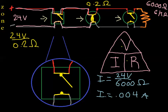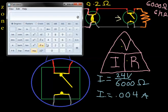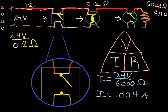So we're going to take 24 volts over 0.2 ohms. Go back to our calculator. 24 divided by 0.2 equals 120 amps.